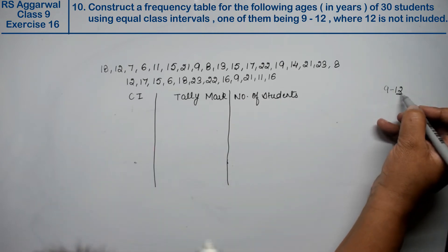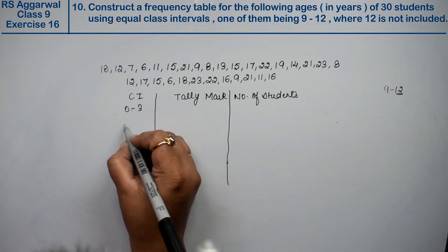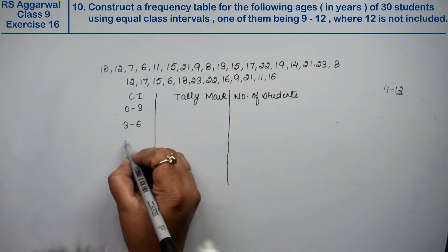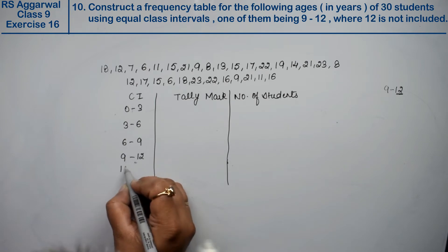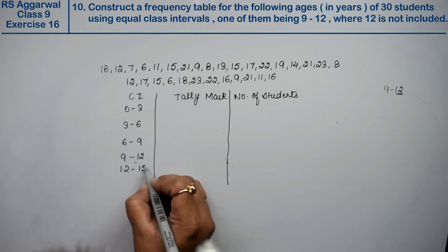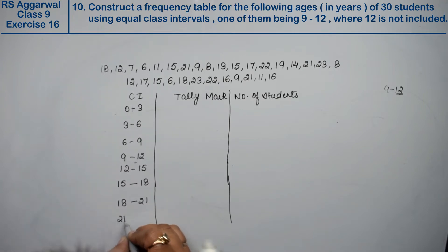We have 9 to 12, the difference is 3. So we have 0 to 3, 3 to 6, 6 to 9, 9 to 12, 12 to 15, 15 to 18, 18 to 21, 21 to 24.